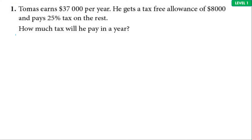First question, Level 1. Thomas earns $37,000 per year. He is getting a tax-free allowance of $8,000. He pays 25% tax on the rest. How much tax will he pay in a year?